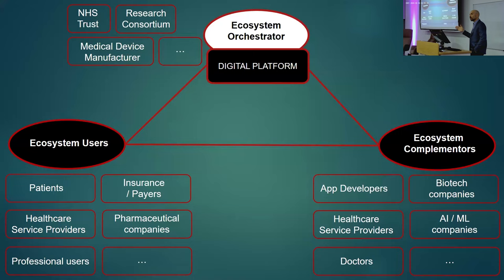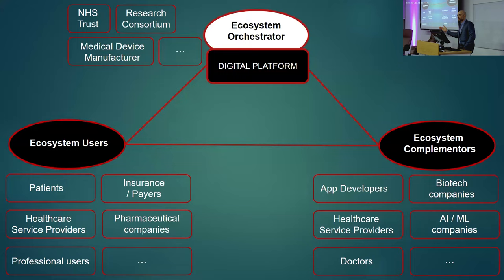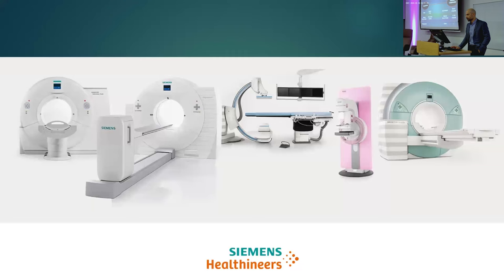Doctors on platforms like Doctor Care Anywhere are complementors because they provide services on demand. The third set of actors — users — could include patients but also other actors that consume those services. For example, a hospital with no resident radiologists could receive services from another hospital with extra capacity. In other words, the roles between complementors and users could switch.